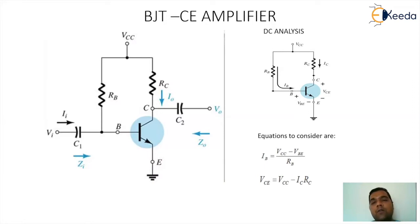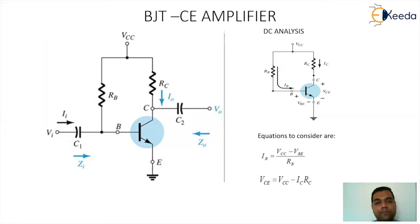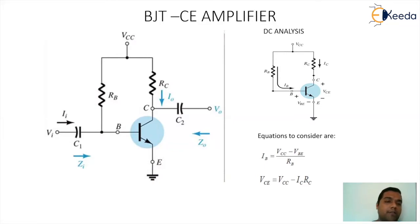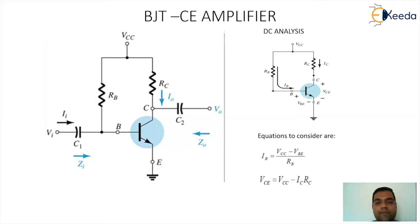Whenever we try to analyze the circuitry, the analysis will be split up into two parts. The first will be the DC part and the second will be the AC part. Whenever we talk about the DC part, all the capacitors will work like open circuit and the voltage source will work like a short circuit. So the DC section of the circuitry has a transistor with resistance RB, RC, and VCC.